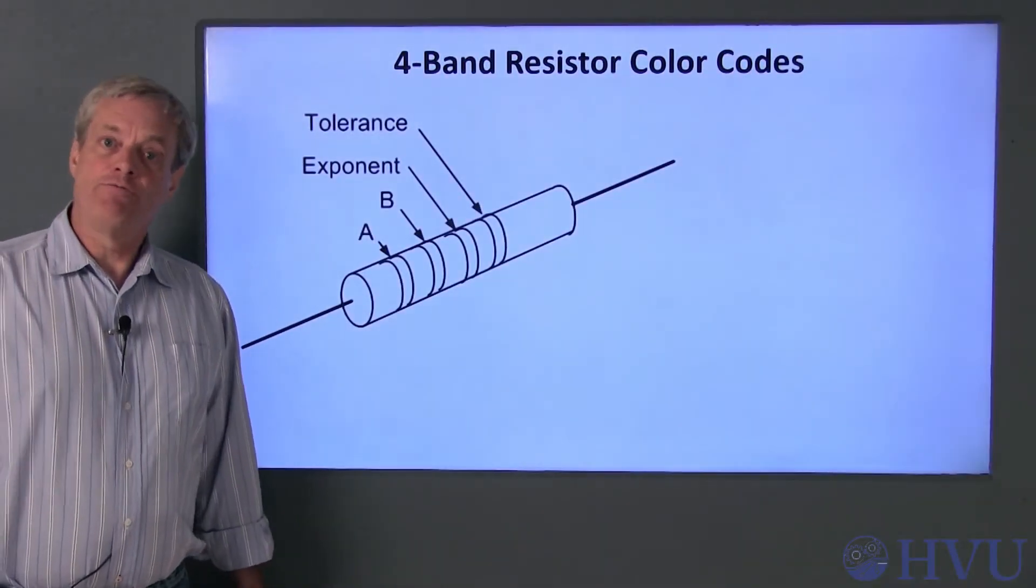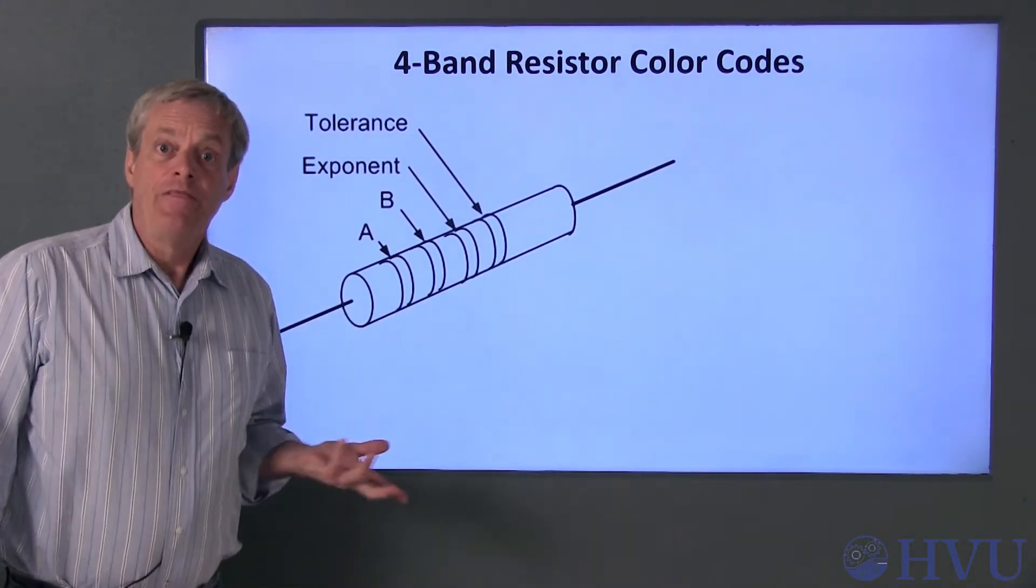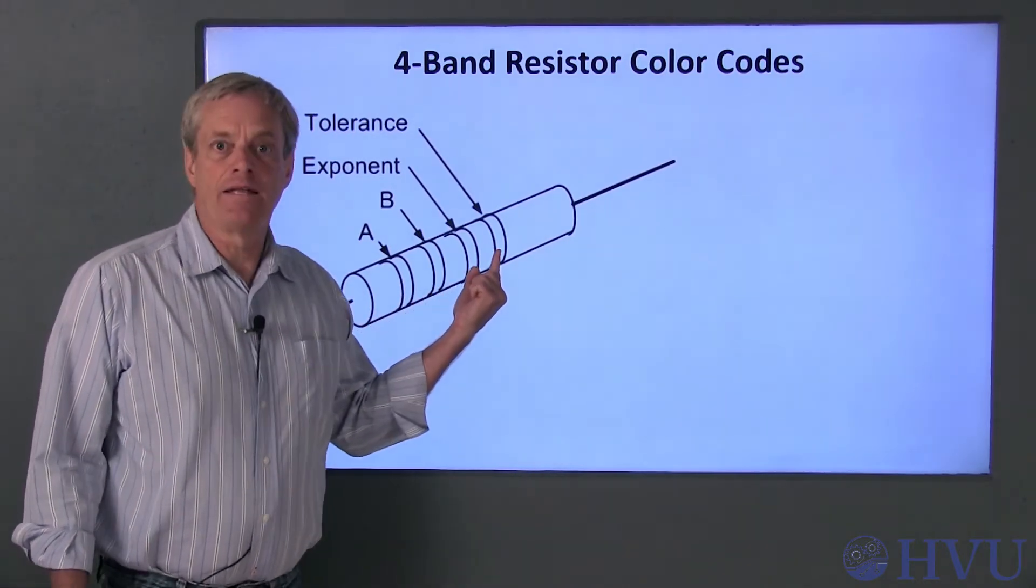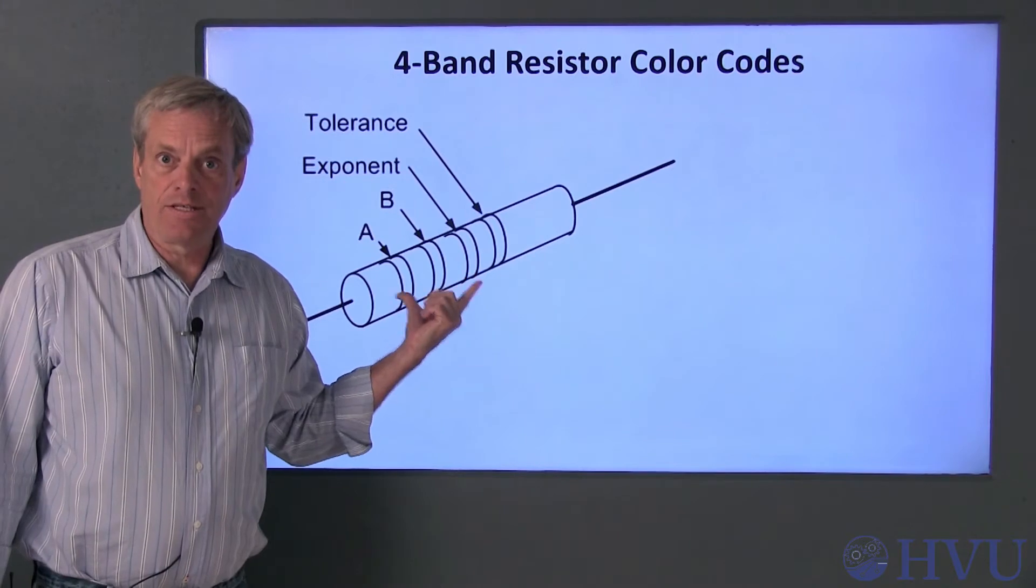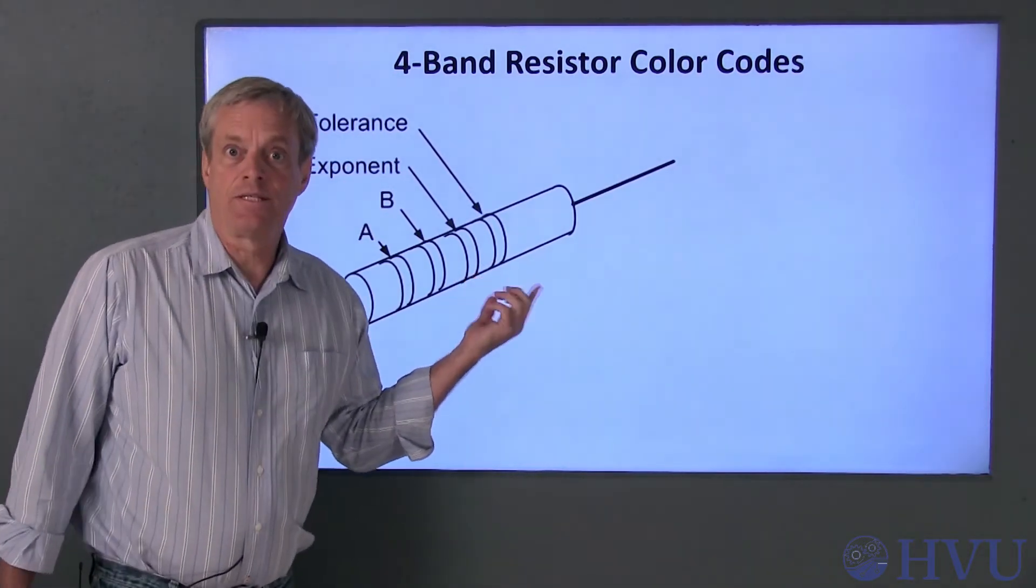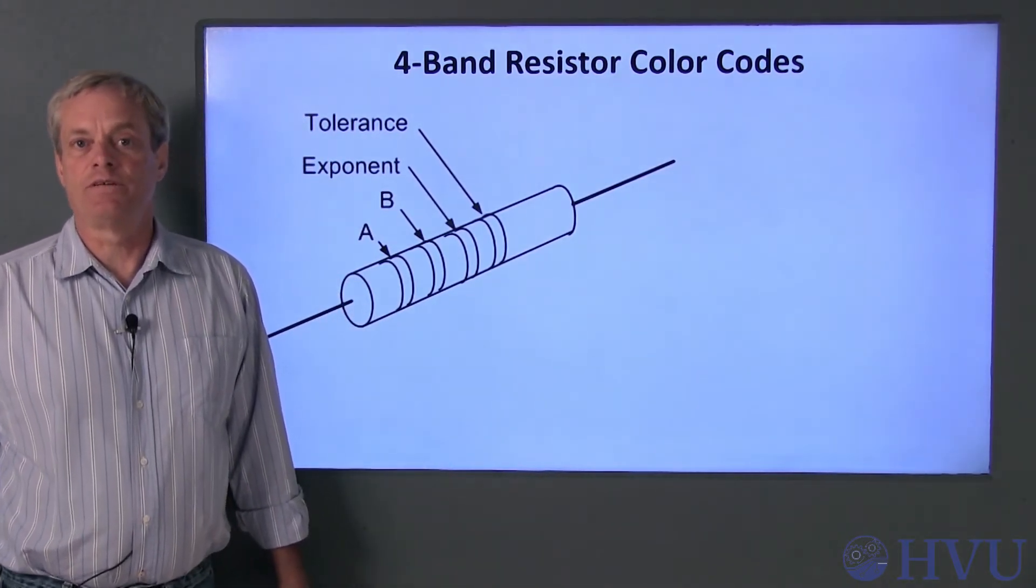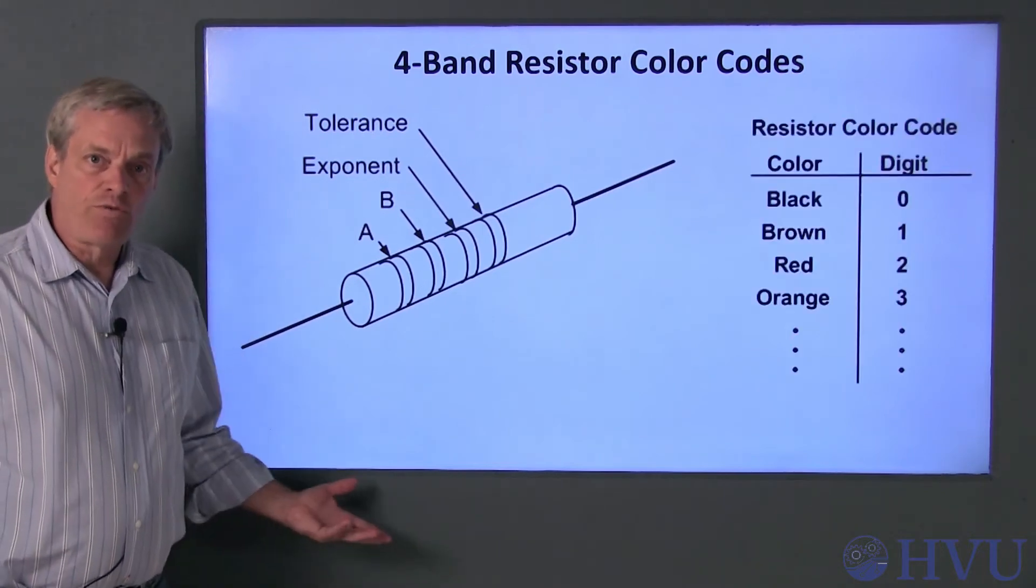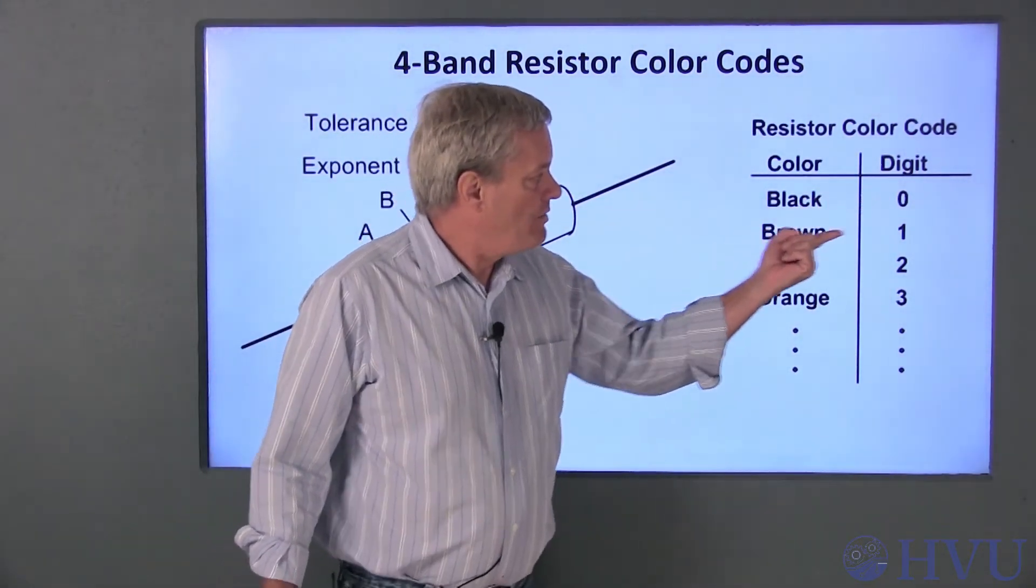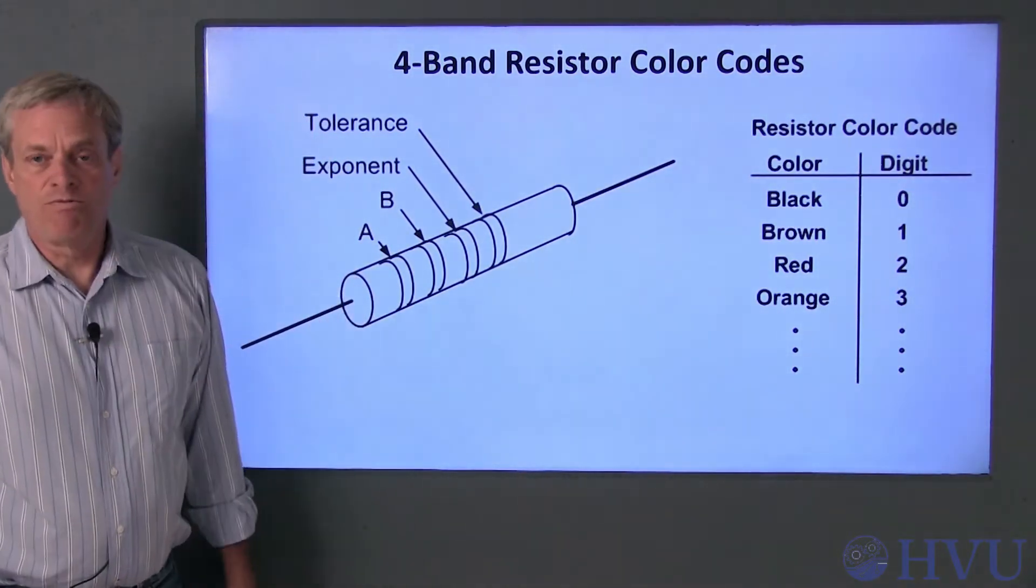Resistors can have either 3, 4, or 5 color bands. This is a typical 4-band resistor. This means that the resistance value and its tolerance are coded in 4 colored bands on the resistor. The first 3 bands consist of a resistance value in exponential notation. The 4th band is the tolerance, which tells us the allowable error between the actual and nominal resistance. The colors of the first 3 bands indicate the digits 0 through 9. Black is 0, brown is 1, red is 2, and so on. A complete table of colors is provided in the next slide.